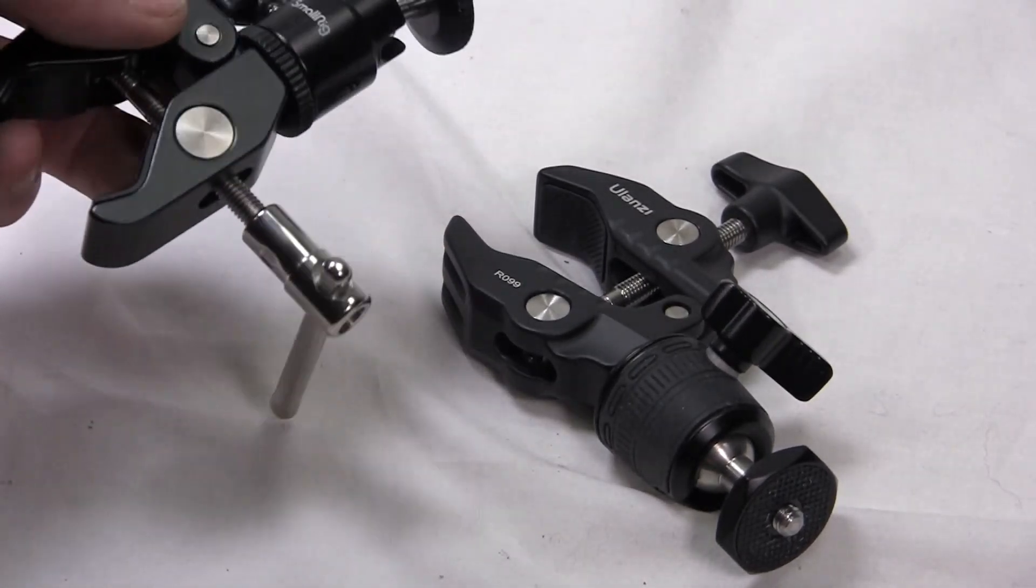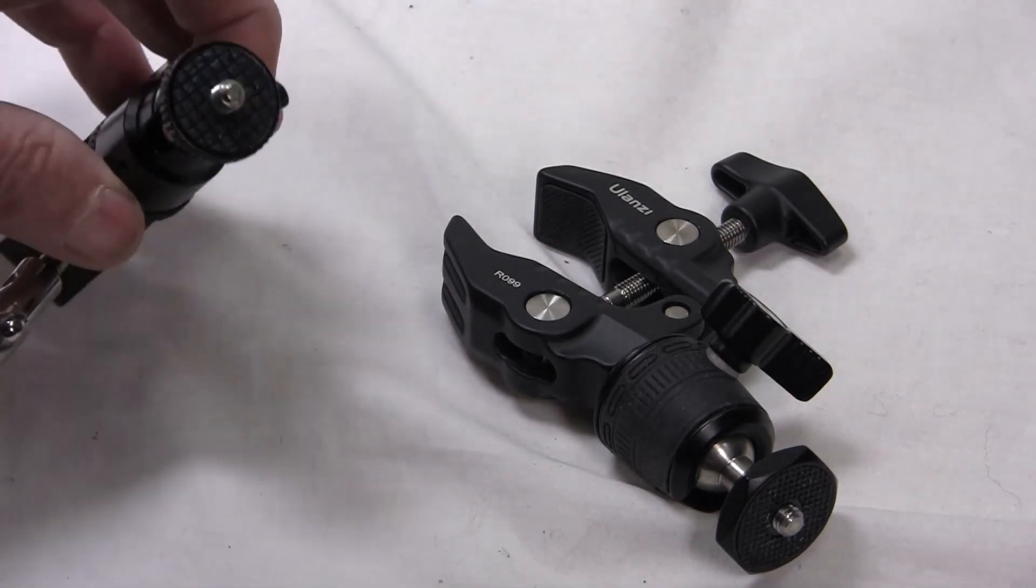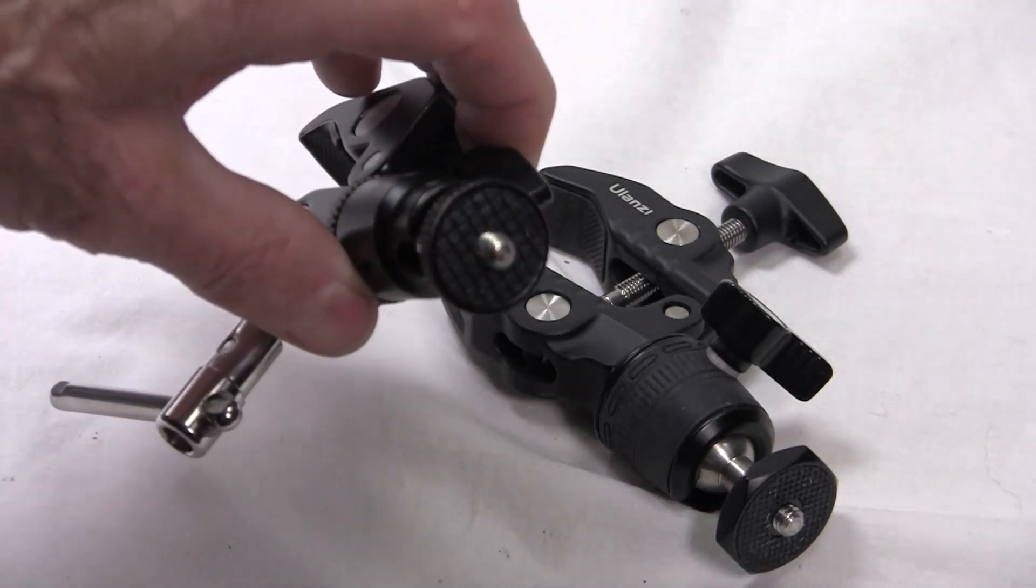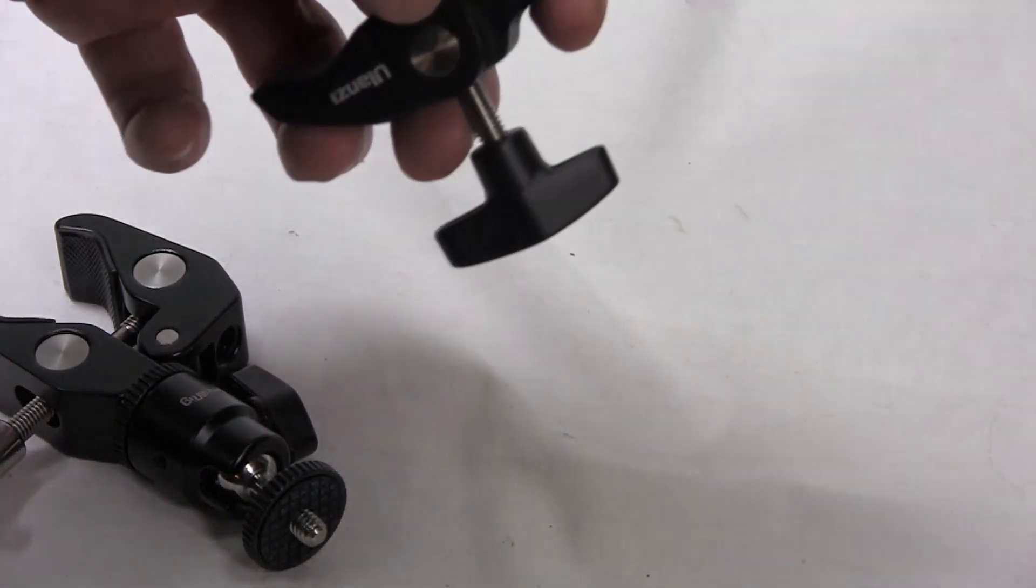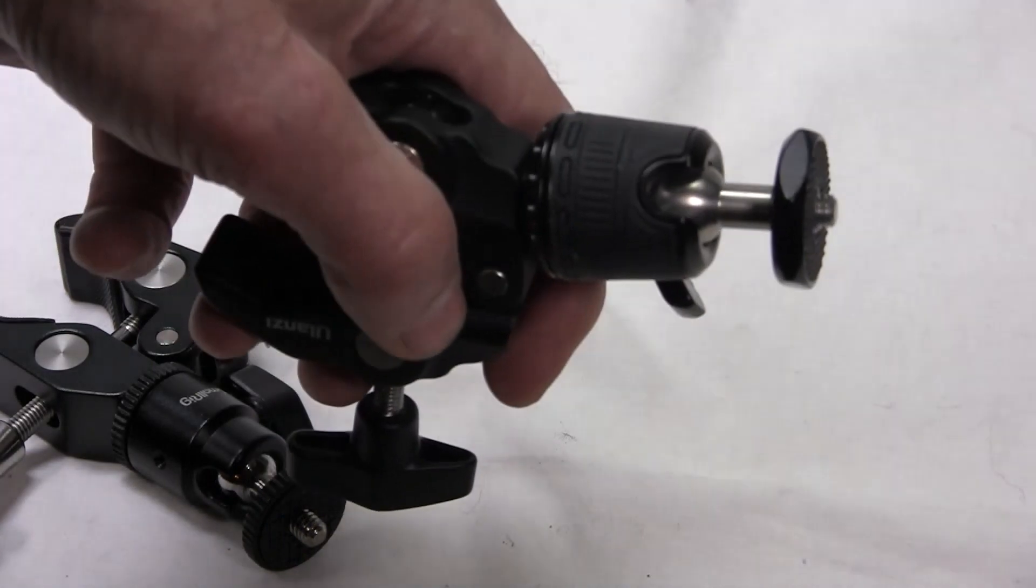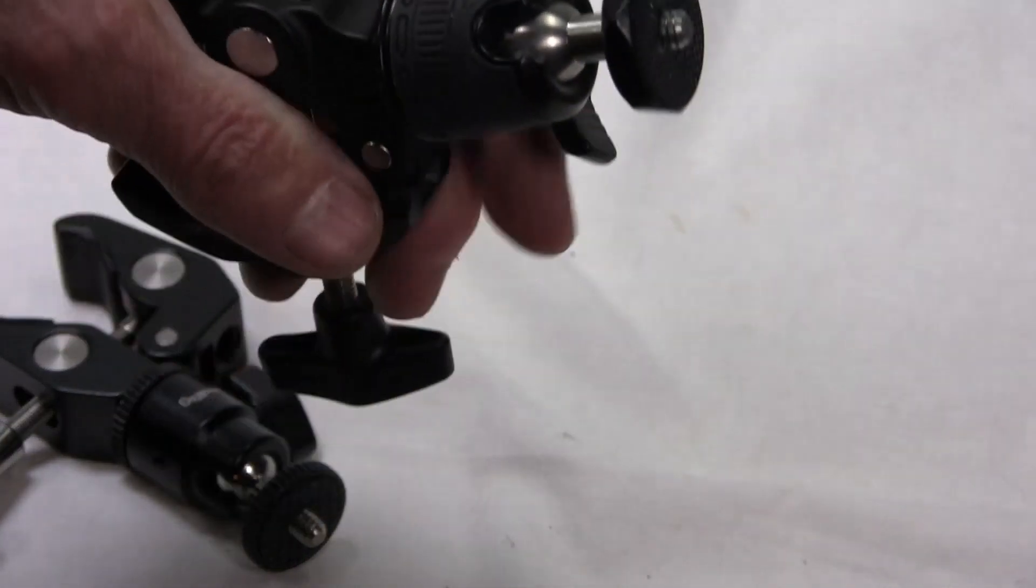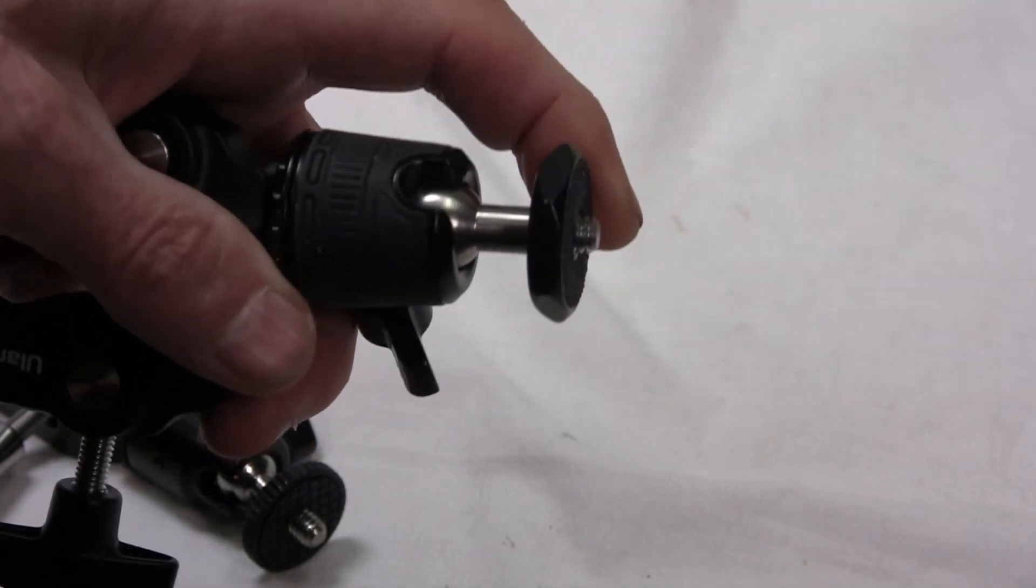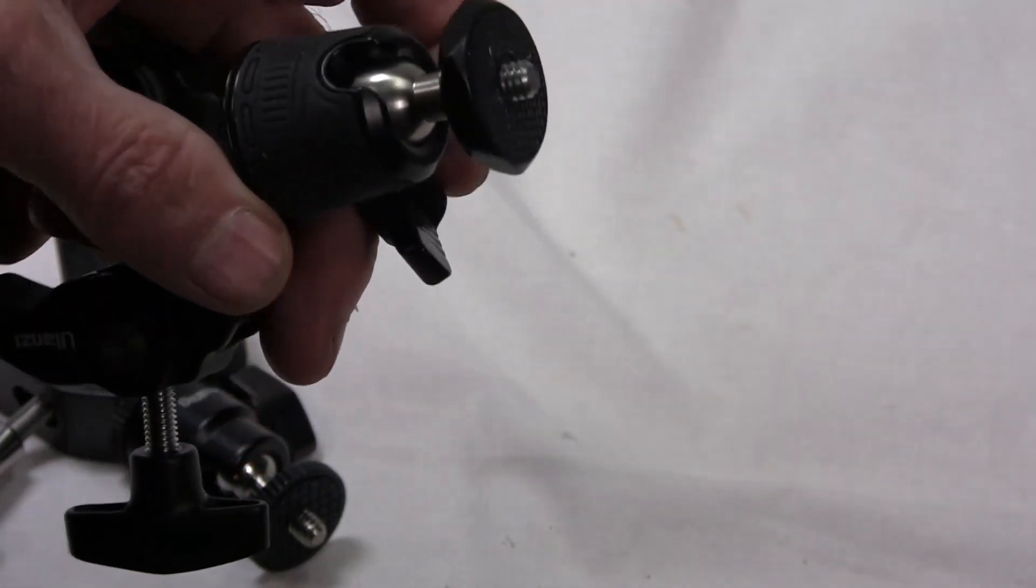They're very similar except the Small Rig has a real small ball and the Ulanzi has a larger ball. It has a little bit larger tightening nut down there.